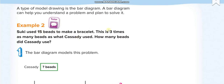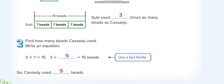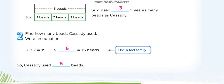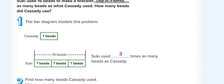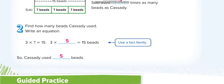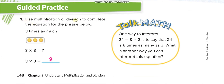Three times what will give you 15? Three times five equals 15, so Cassidy used 5 beads. You have to understand the problems carefully. In the first example they gave you the number and asked for three times that. This time they gave you the answer, so you have to work backwards.